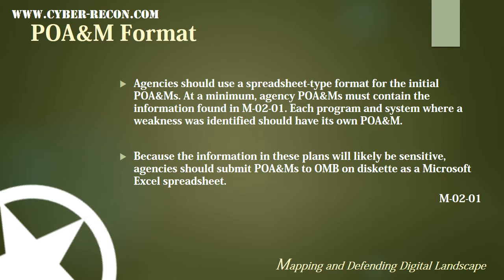The format of the POAM is important as well. OMB has determined that agencies should use a spreadsheet-type format for the initial POAMs, and at a minimum, these agencies' POAMs must contain the information found in M-02-01. Each program and system and common control set where a weakness was identified should have its own POAM. And because the information in these plans will be sensitive, agencies should submit the POAMs to OMB on a disk in a format like Microsoft Excel.